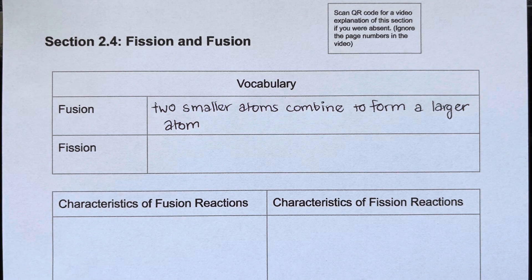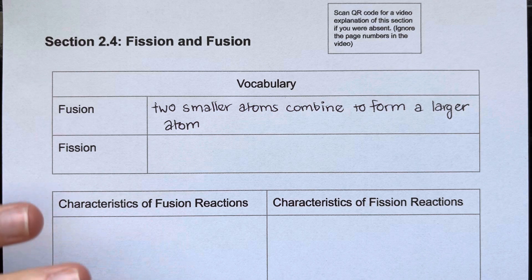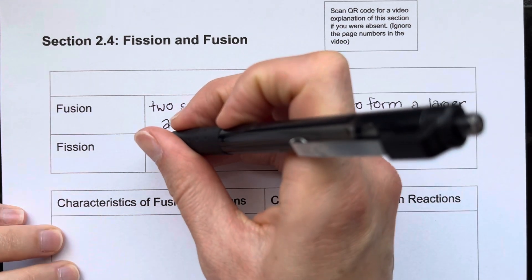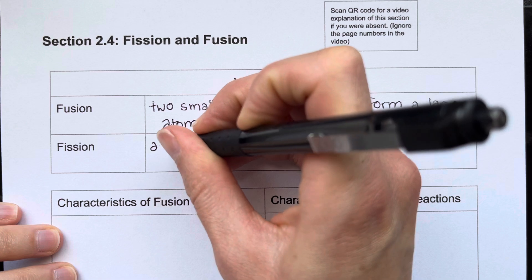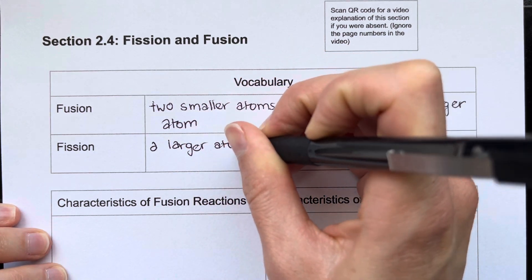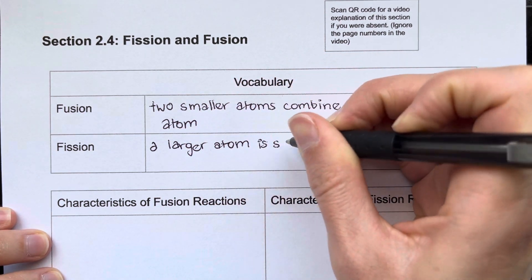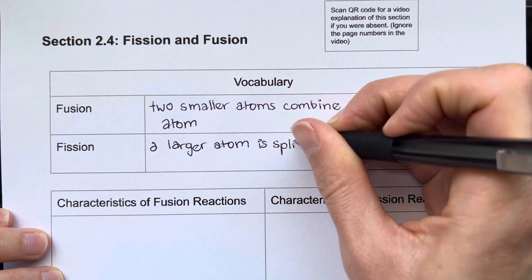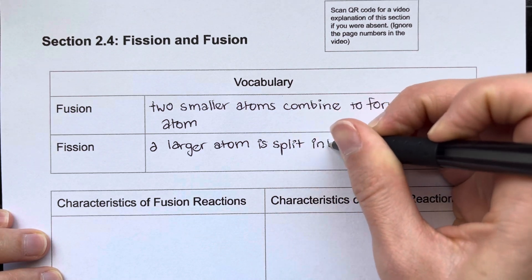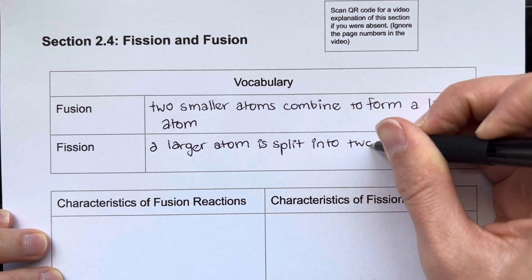Fission is the opposite. So fission is when an atom splits into two smaller atoms. That process also releases a lot of energy. So fission is when a larger atom is split into two smaller atoms.